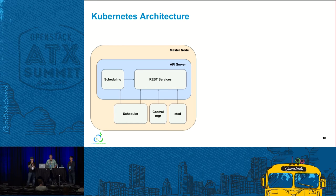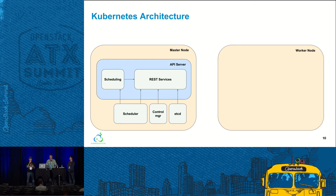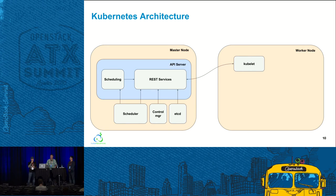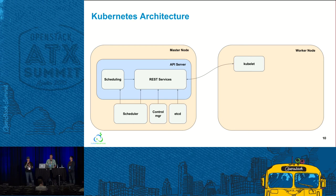The master also has a controller manager that manages the endpoints controller — which manages service endpoints — and the replication controller — which manages scaling pods across the fleet to ensure the desired number of pods are always running. Worker nodes run all components necessary for application containers and load balancing service endpoints, and report resource utilization and status back to the API server. The kubelet service on each worker node receives commands from the master in the form of manifests defining workloads to be performed, and is responsible for checking the health of the service.